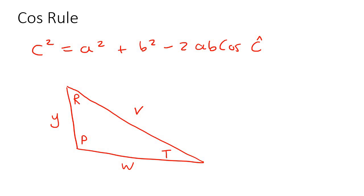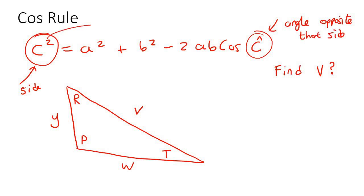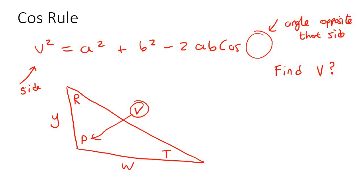Now let's say, for example, that they would like you to find V. So you need to find V — that's this side over here. What you need to understand about this formula is that these two parts are the most important: this part is a side, and this part is the angle opposite that side. So if you want to find side V, then you will change this to a V, and then the angle opposite that would be P. So you'd put a P over here.